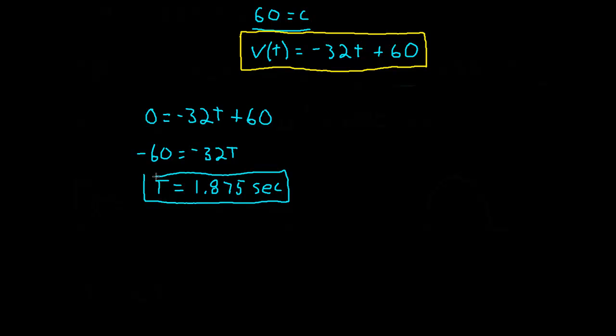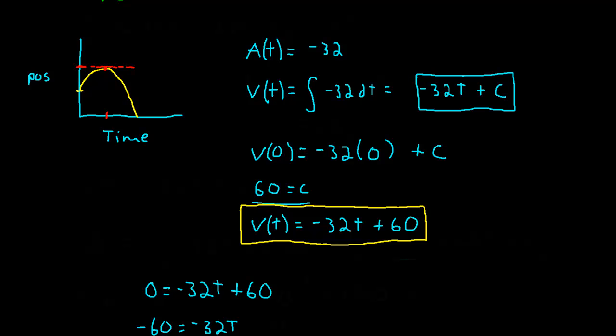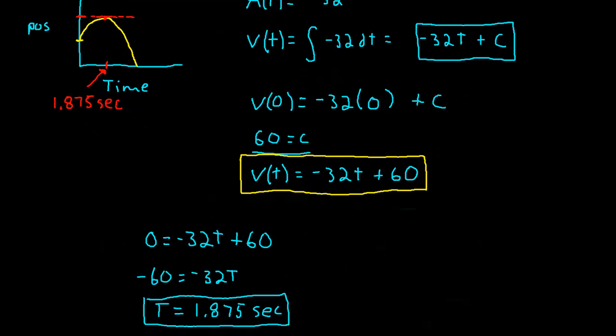Okay, that's the time that this position function, where its velocity is equal to 0. In other words, this time right there, we just found that. It is 1.875 seconds. Now, life would be good if we had a position function to plug that time into. So, let's go ahead and find that.